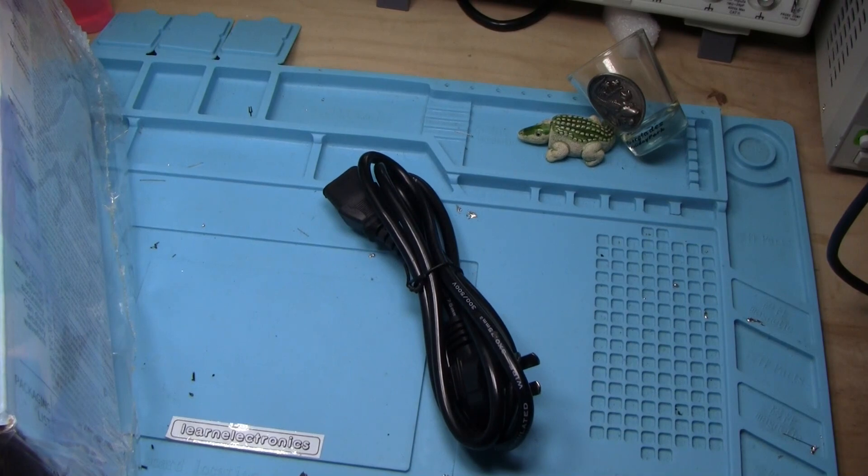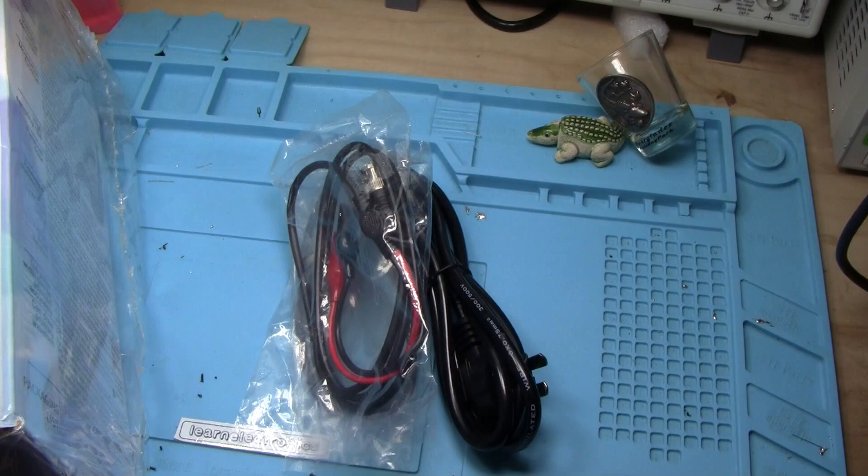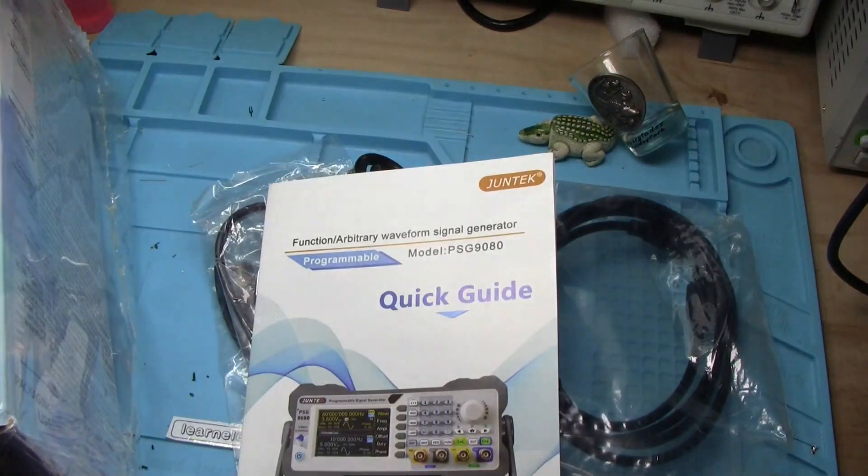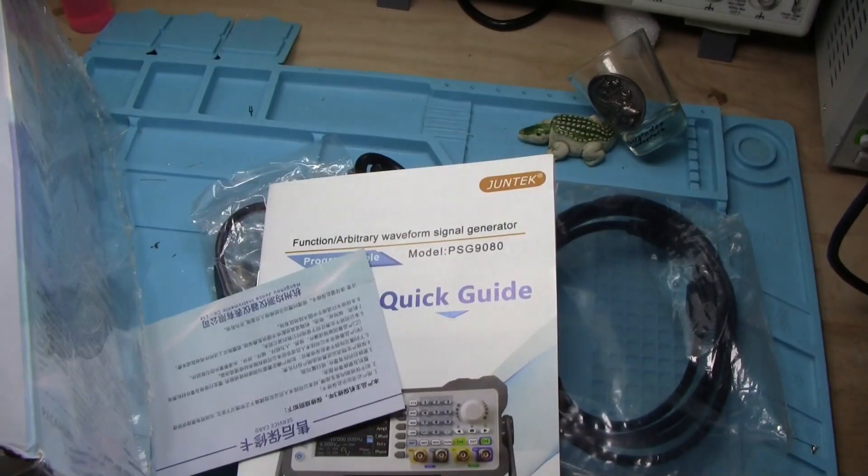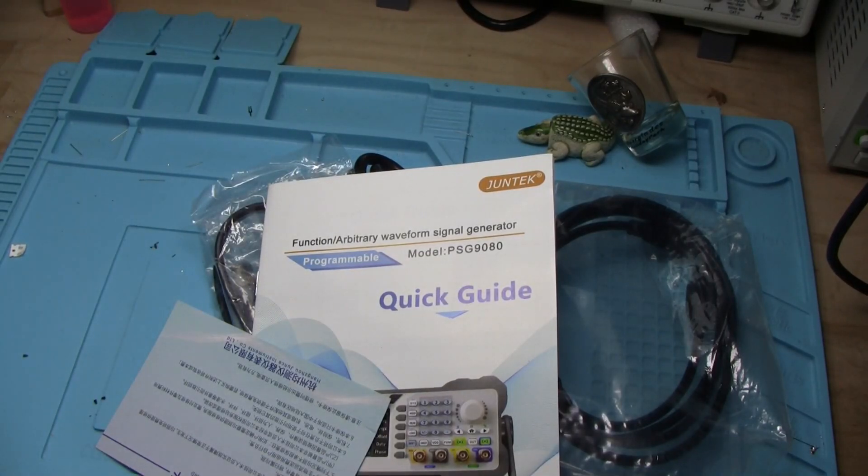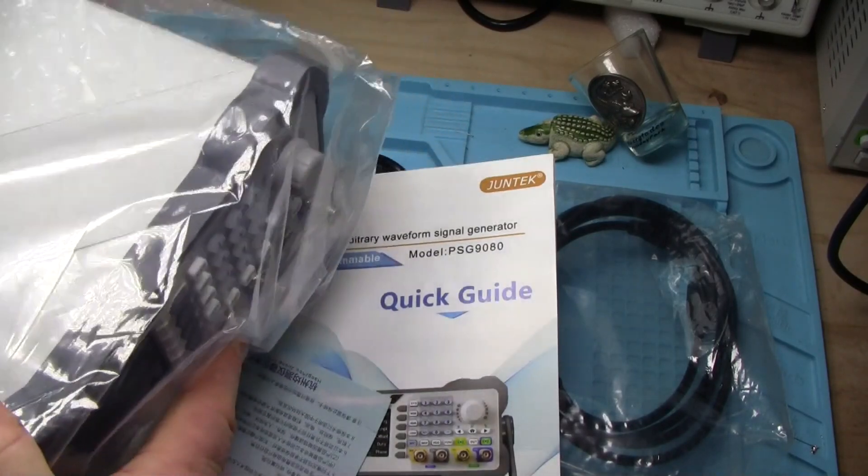We have an IEC cable, got a BNC to BNC, BNC to alligator clip, USB, a manual, the warranty card, and the unit.